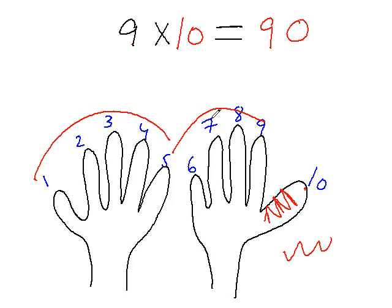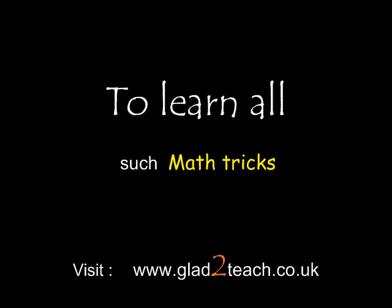So in the next class, we would be learning the trick to memorize the times table or the multiplication table of even numbers between 10 to 20 like the multiplication table of 12, 14, 16, 18. So we will be learning the trick to memorize these tables.